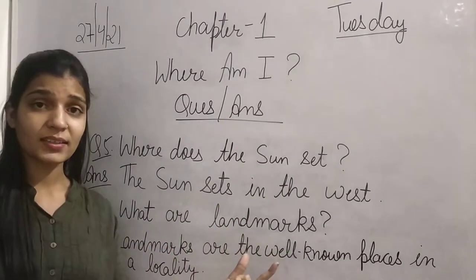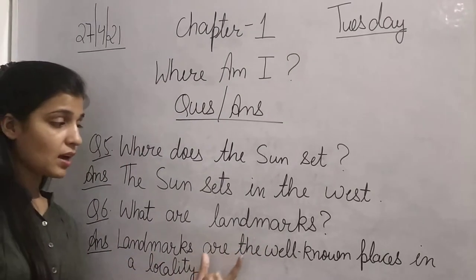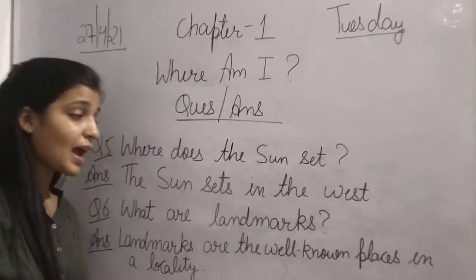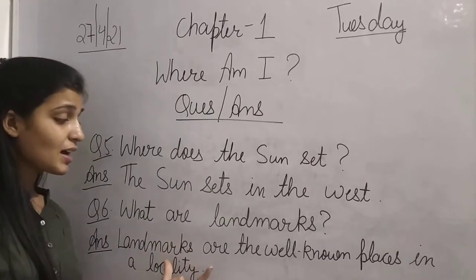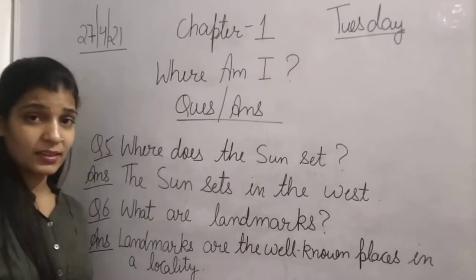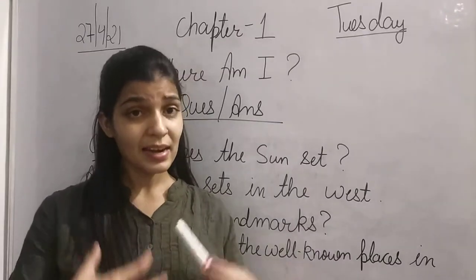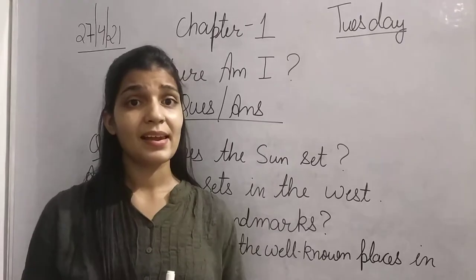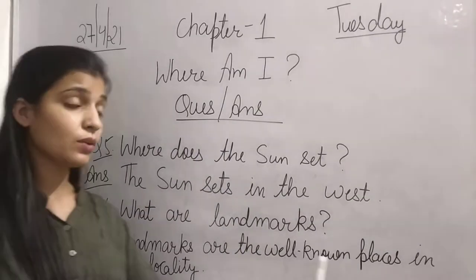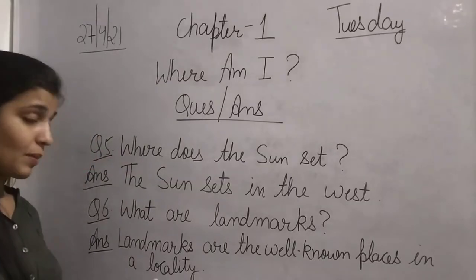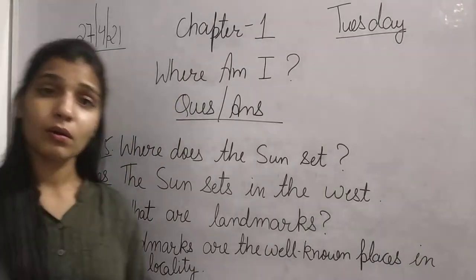The next question: What are landmarks? Landmarks are the well-known places in a locality. 'Well-known' means jaane-pehchane. For example, one temple is nearby my home — that is my landmark. Whatever well-known, recognized place there is, that is called a landmark. So landmarks are the well-known places in a locality.